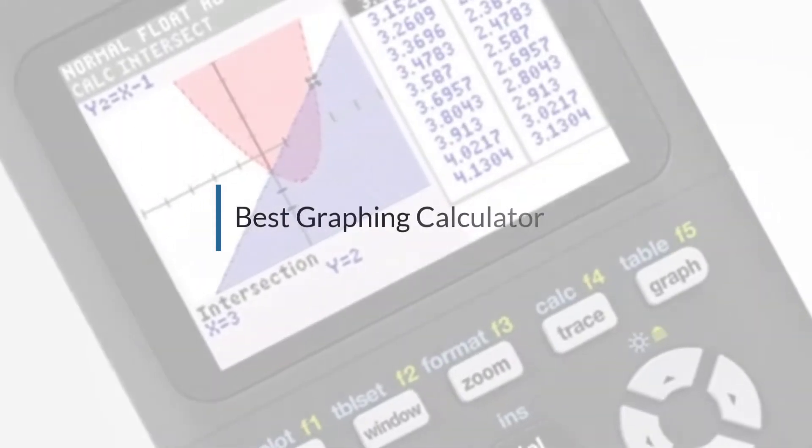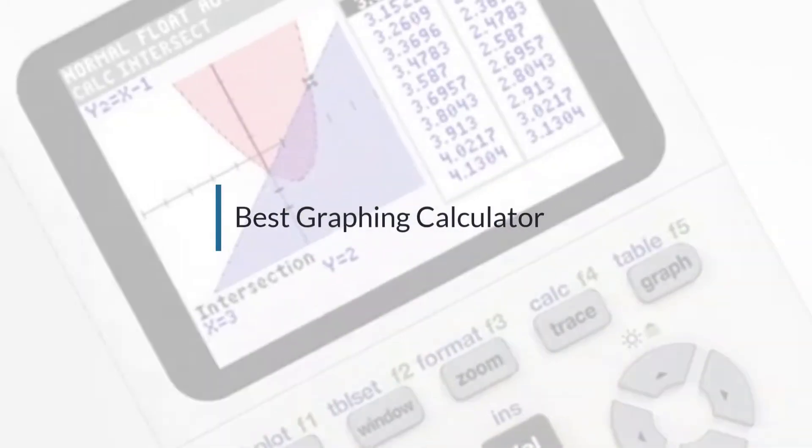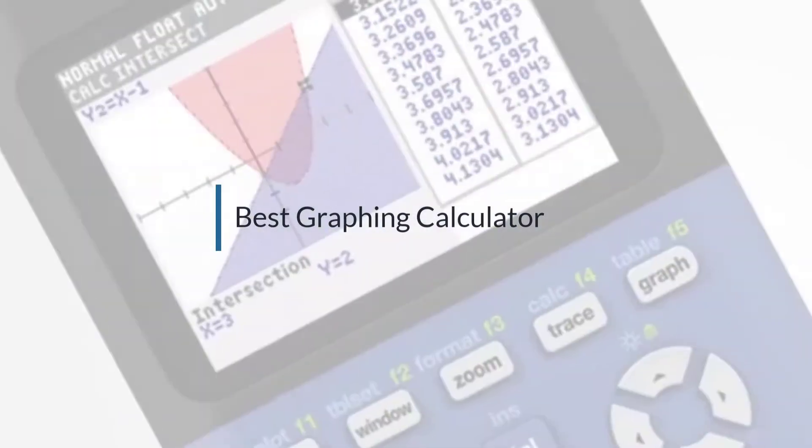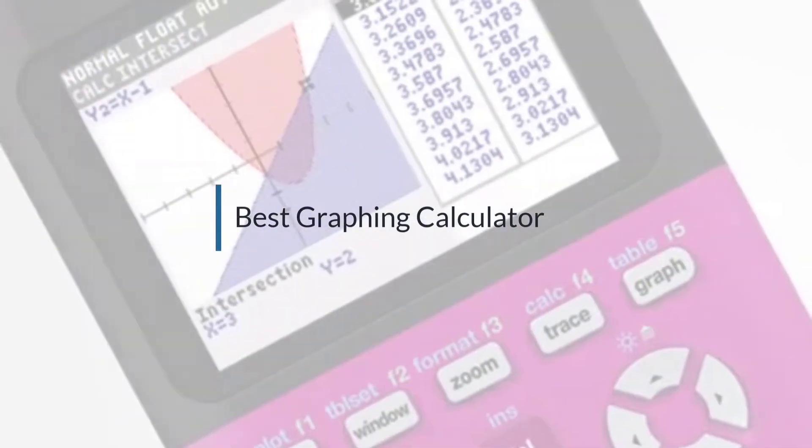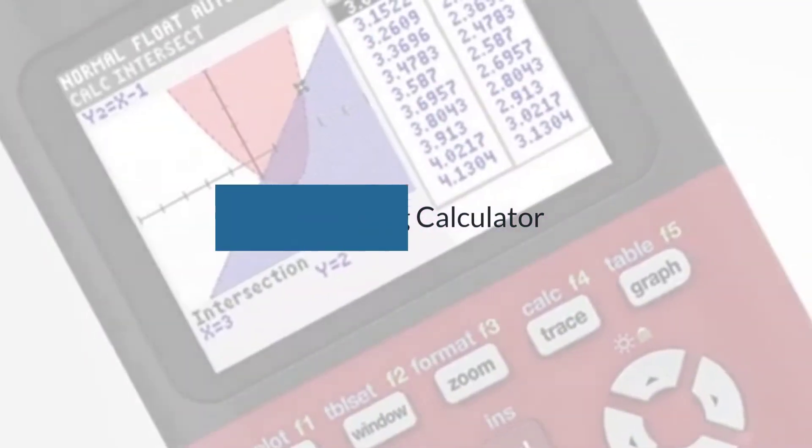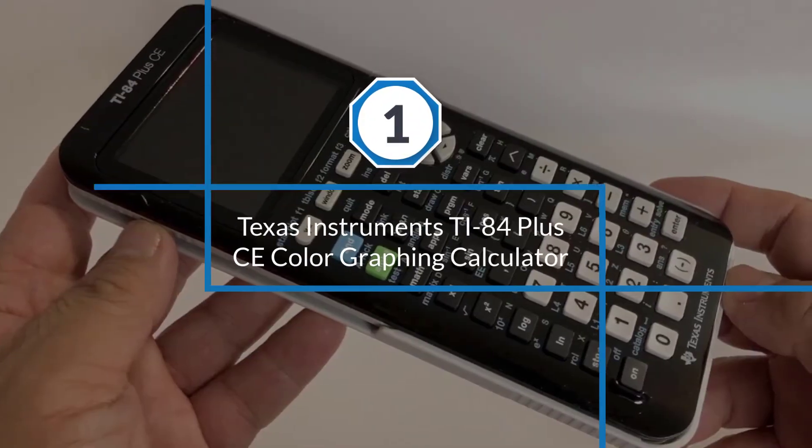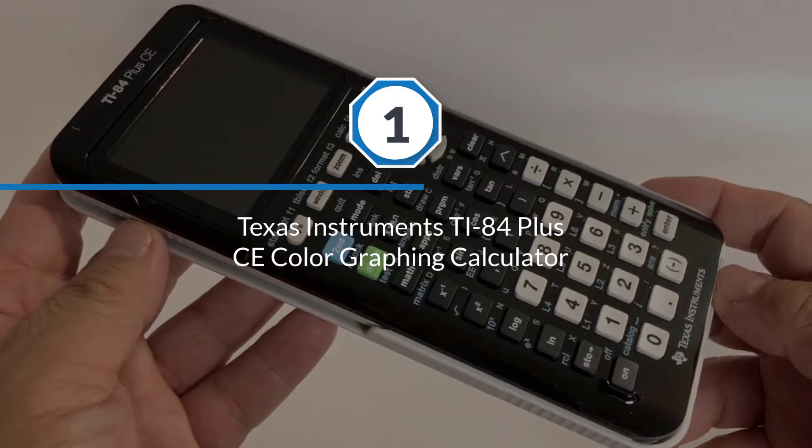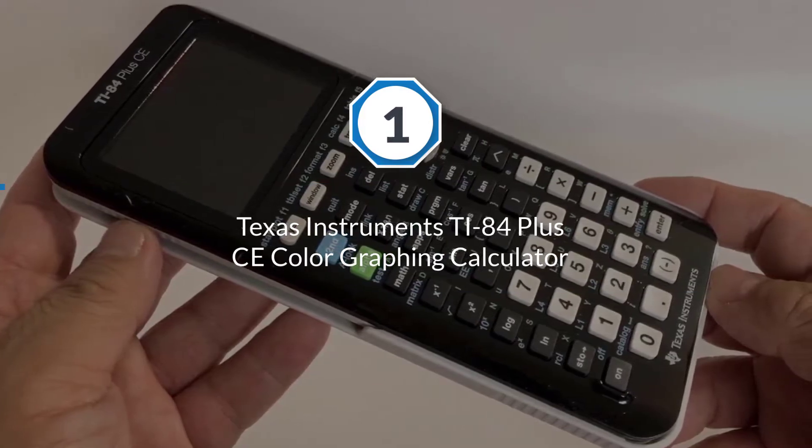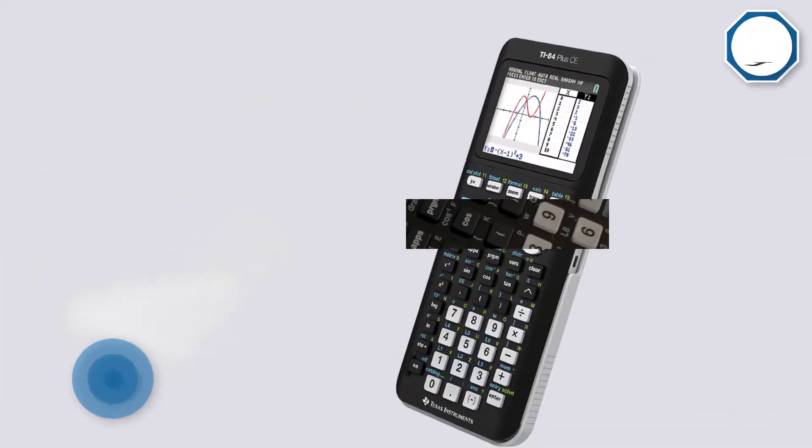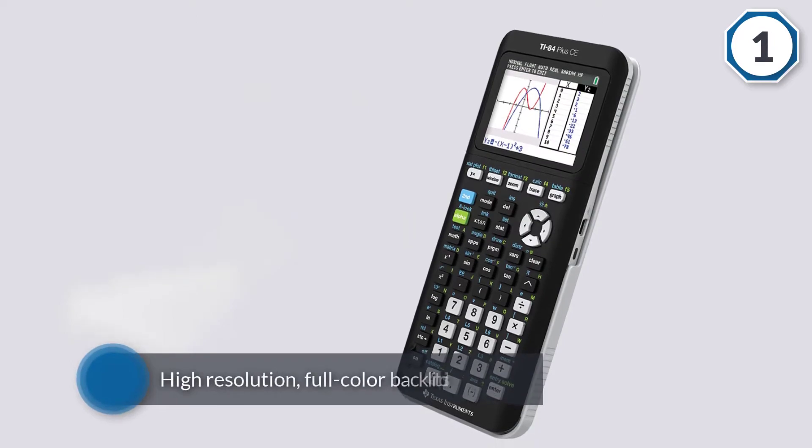If you are looking for the best graphing calculator, here is a collection you have got to see. Let's get started. Number one, most popular: Texas Instruments TI-84 Plus CE Color Graphing Calculator. The thin, lightweight design features a high-resolution, full-color backlit display with a sleek design.